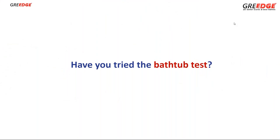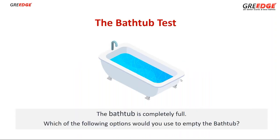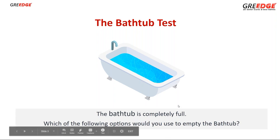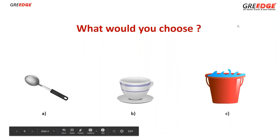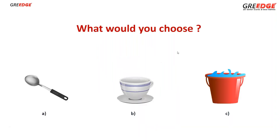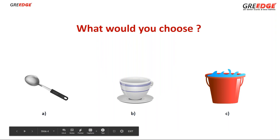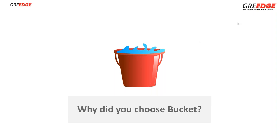Have you tried the bathtub test? Just imagine the bathtub is completely full. You have three options to empty the water: a teaspoon, a teacup, and a bucket. Which option would you choose? You can choose only one. Why did you choose the bucket?